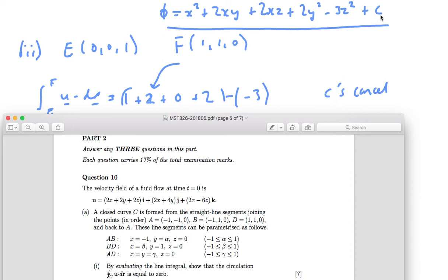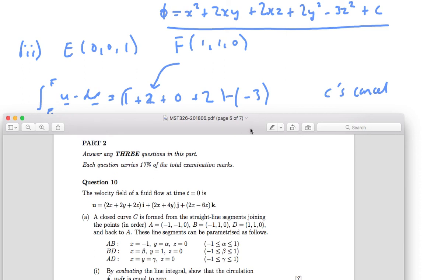I'll put there the c's cancel, so I'm writing plus c minus plus c. That's why you don't get a plus c when you integrate, because in a definite integral of limits, the c's always cancel. So I'll just not bother writing it.